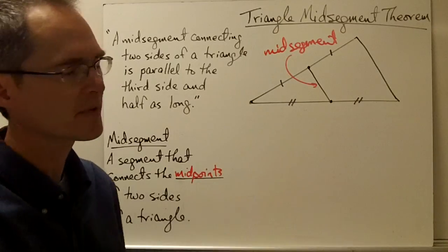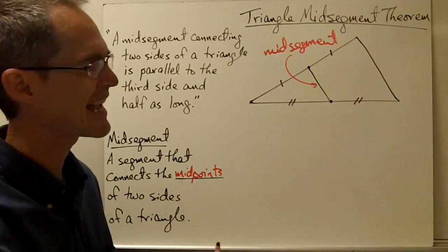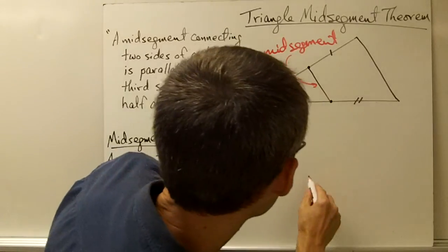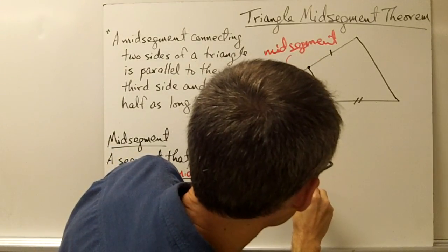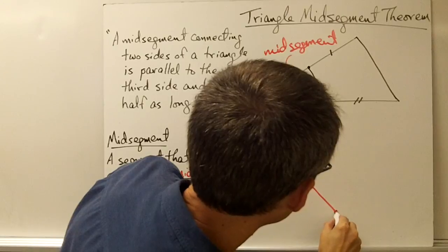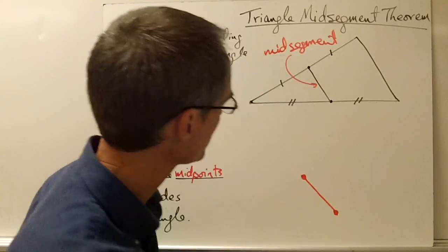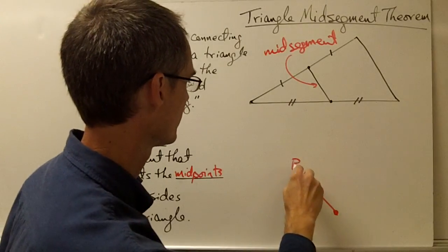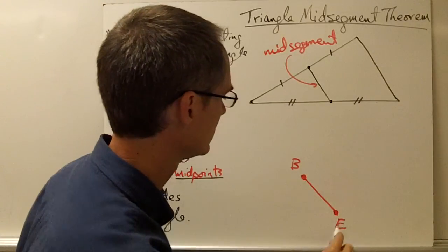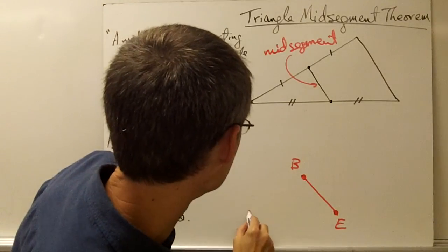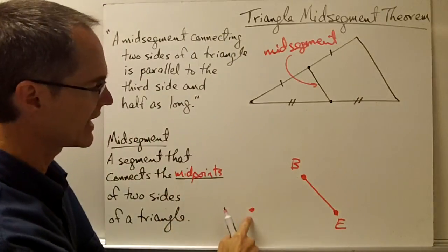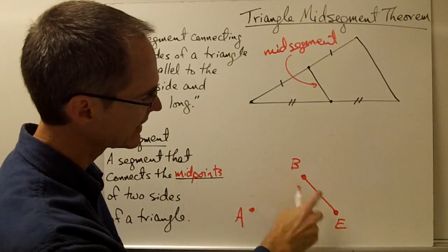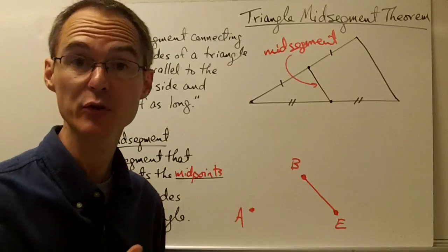We're going to prove this by doing something we've done before: taking a segment and dilating it. Let's say we have a segment we want to dilate — let's call this segment BE. I want to dilate this segment, and this is my dilation point right here. I'll call this point A. I'm going to dilate this segment by a factor of two.